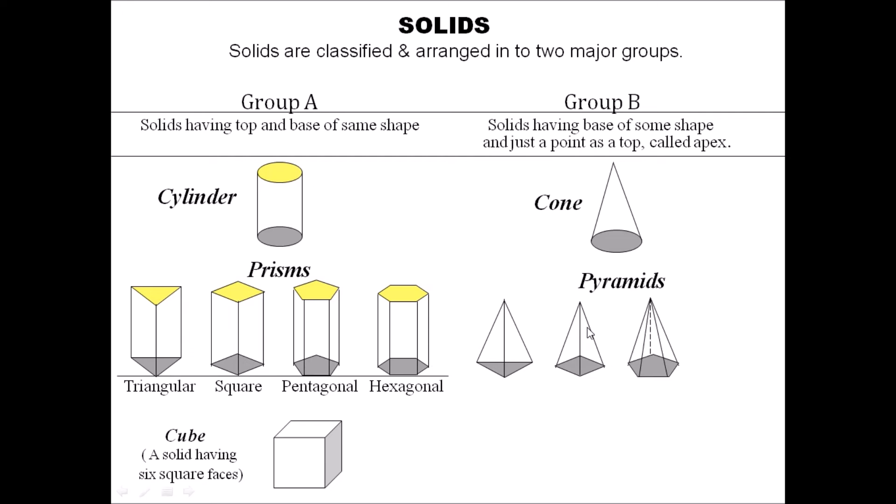Here it is a triangular pyramid, square pyramid, rectangular pyramid, and hexagonal pyramid. Just like the case of cube in Group A, here we have tetrahedron.